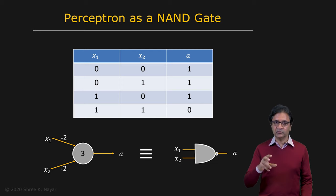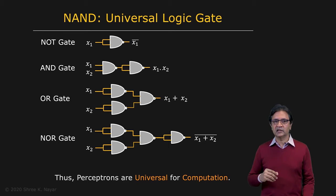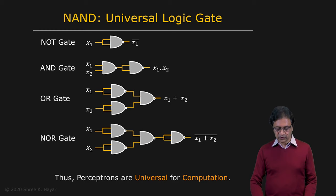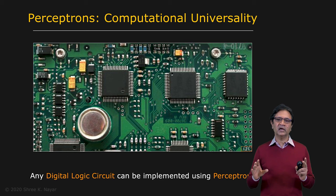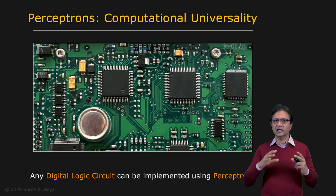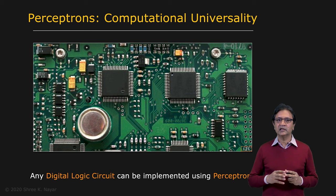So this particular perceptron is equivalent to a NAND gate. And what's really remarkable about that is that we know that a NAND gate is a universal logic gate, which means that all the other gates that are familiar to us, such as a NOT gate, an AND gate, an OR gate and a NOR gate, all of these can be constructed using one or more NAND gates. And therefore, since a NAND gate can be implemented using a perceptron, perceptrons are universal for computation. What that really means is that if you give me any digital logic circuit, it doesn't matter how complex the circuit is, it can be implemented as a network of perceptrons.